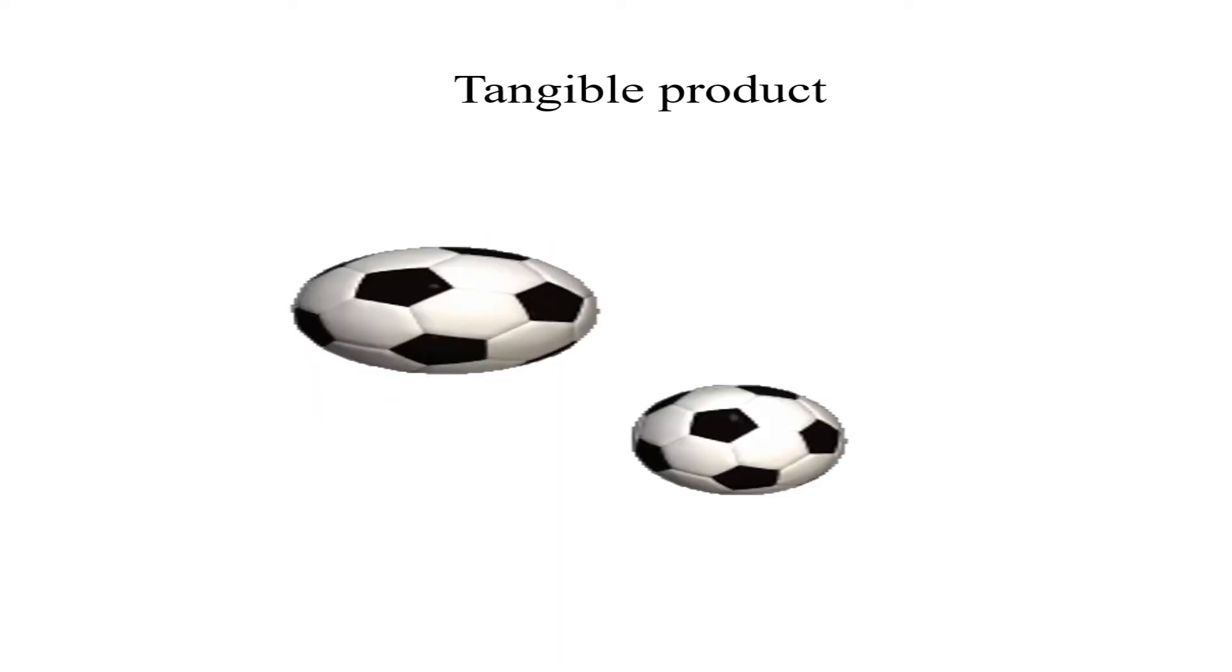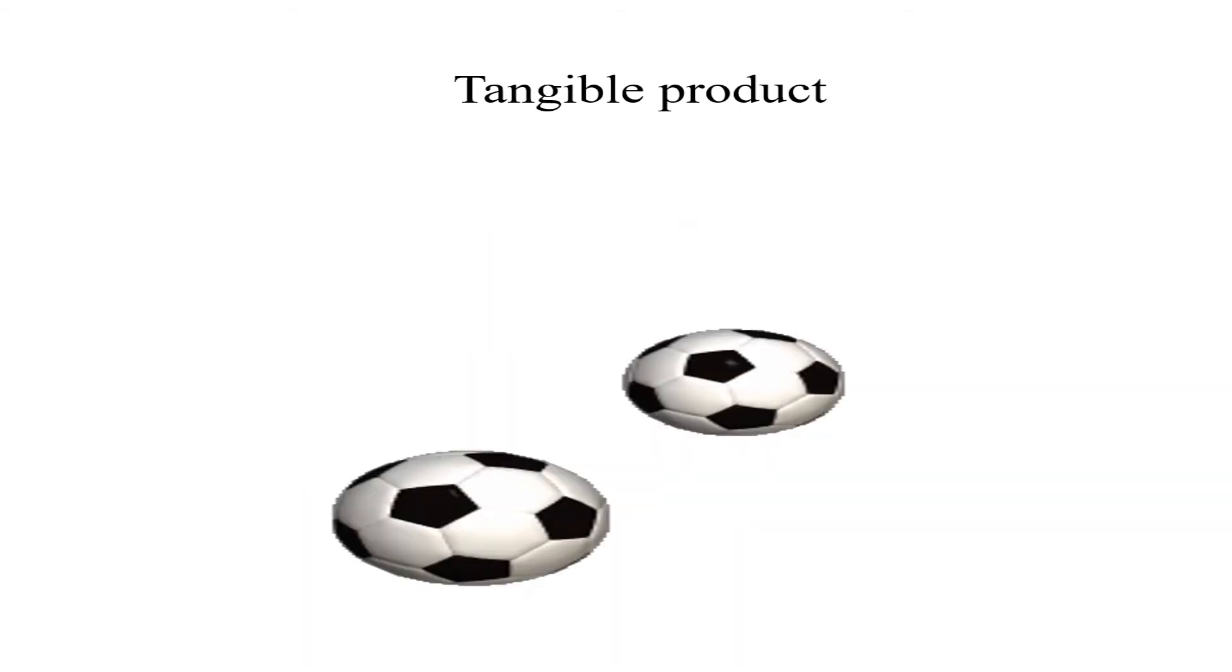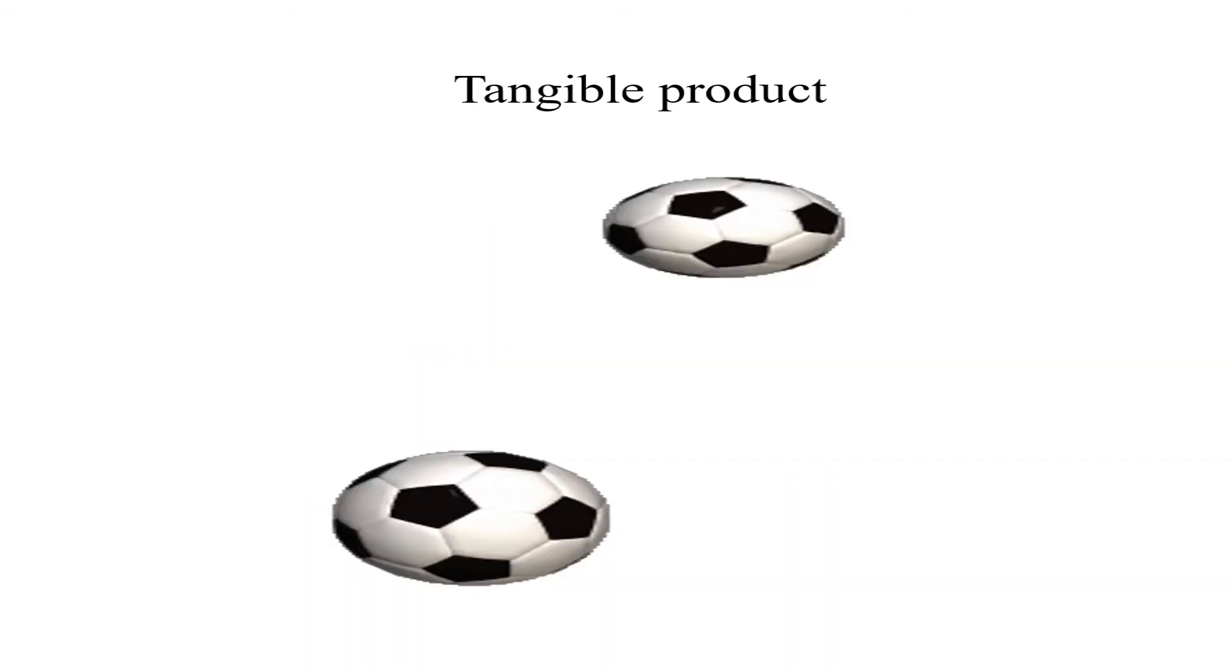A tangible product, therefore by definition, is a physical object that can be perceived by touch, such as a building, vehicle, or gadget.